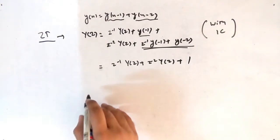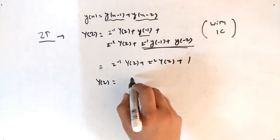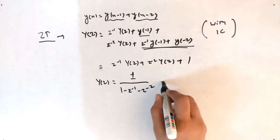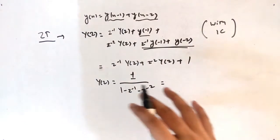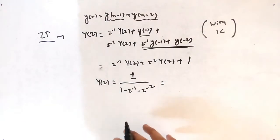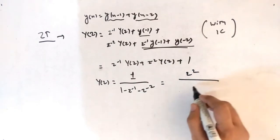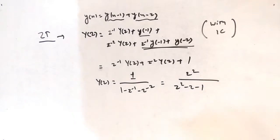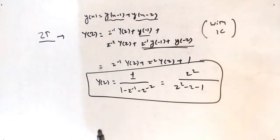Rearranging, we get Y(Z)·(1 - Z⁻¹ - Z⁻²) = 1. Multiplying numerator and denominator by Z² (the highest power) to get positive powers of Z: Y(Z) = Z² / (Z² - Z - 1).